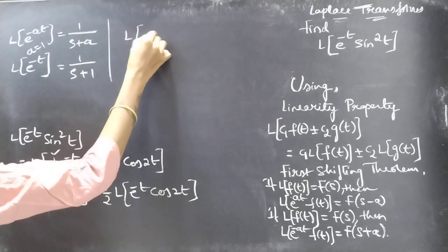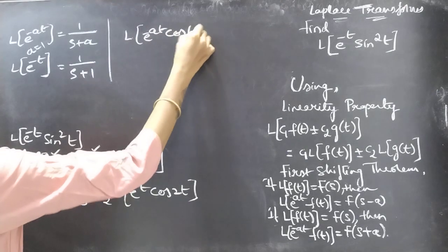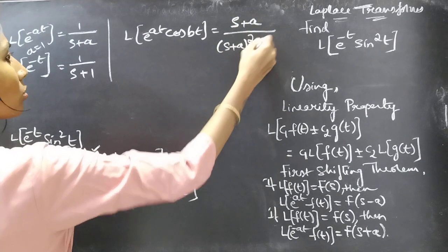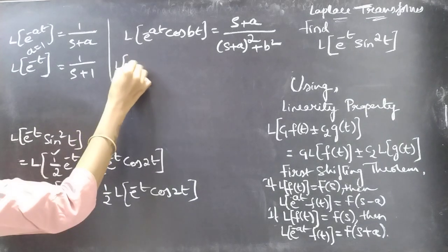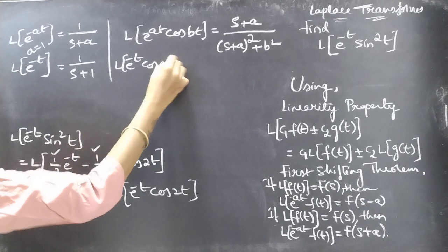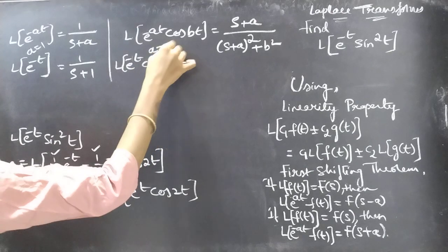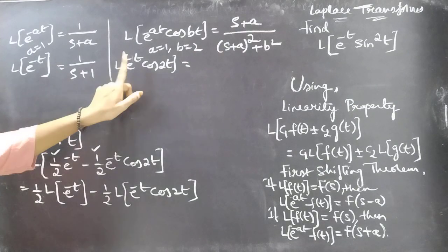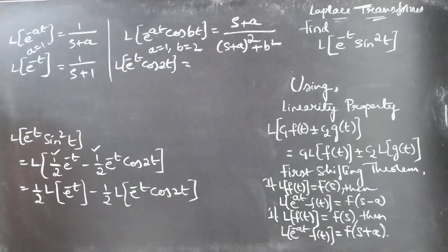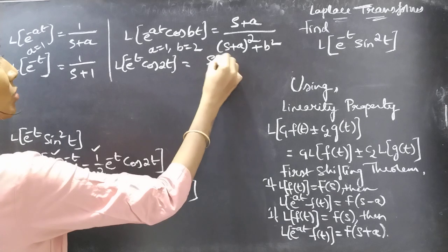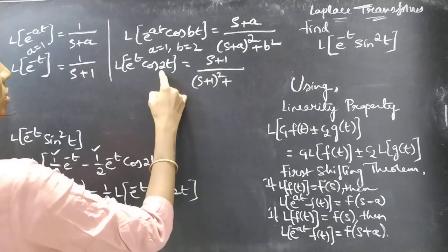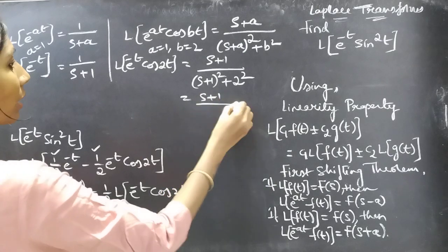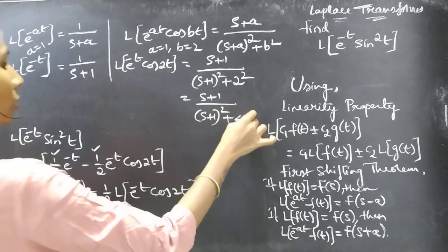And also we know that L of e to the power minus at cos bt equals s plus a by (s plus a) squared plus b squared. For a equal to 1 and b equal to 2, we simply replace s by s plus 1. You'll get s plus 1 by (s plus 1) squared plus 2 squared, which equals s plus 1 by (s plus 1) squared plus 4.